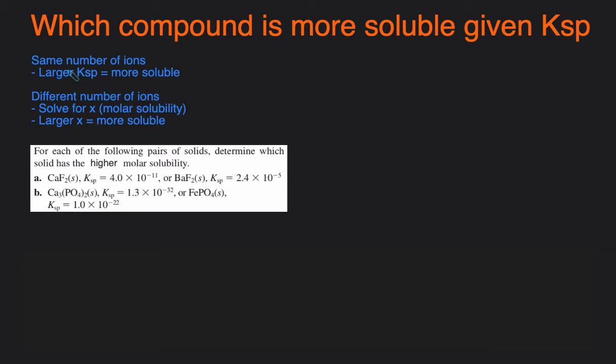In terms of the rules, there are two scenarios. The first scenario is if the compound dissolves and produces the same number of ions. In that case, the compound with the larger Ksp will be more soluble.